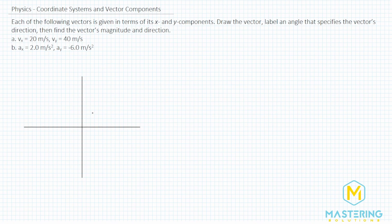In the last few problems that we've done, we were given a vector and asked to calculate the x and y components. Here they're giving us x and y components and asking us to work the other way to get the magnitude and the direction. Let's draw both of these vectors first, and then we'll calculate the magnitude and the direction for both of them.